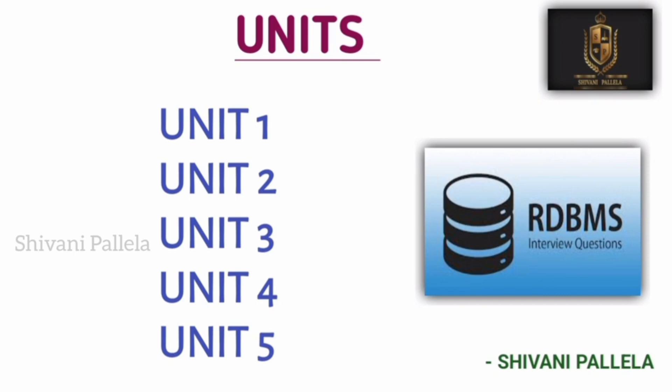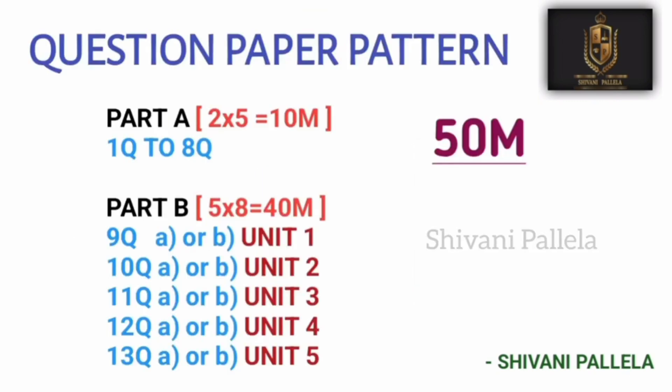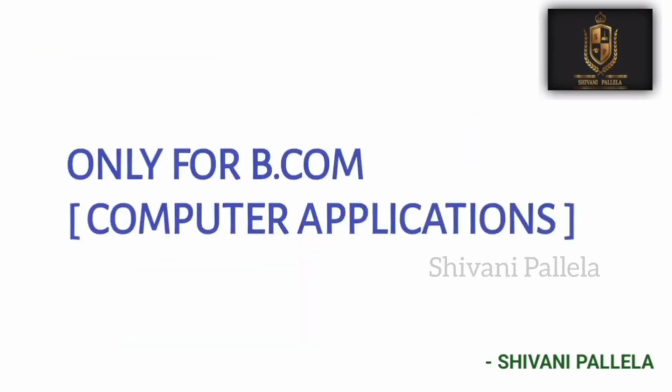Total five units, 50 marks question paper, two hours is the time duration, and passing marks is 18. In Part A you need to attempt five questions, each carries two marks — that's ten marks total. For two marks, write a minimum of seven to eight lines. For Part B, each question has internal choice and carries eight marks — write a minimum of one page or two sides of answers. This subject is only for BCom Computer Applications students, not BCom General.